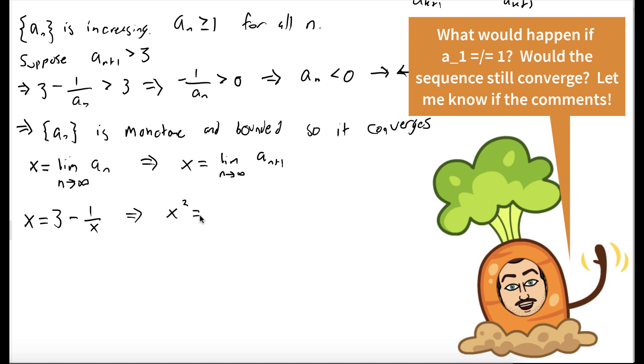We can multiply both sides of the equation by x to get x squared equals 3x minus 1. Bring all the terms to the left-hand side and hand this to your friend who's in sixth grade, who knows how to use the quadratic formula. And they'll be able to solve this for us. We get x is equal to 3 plus or minus the square root of 5 over 2.